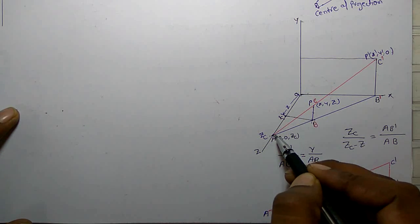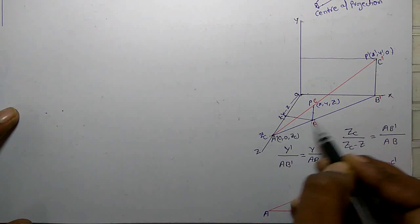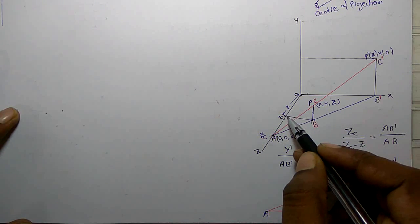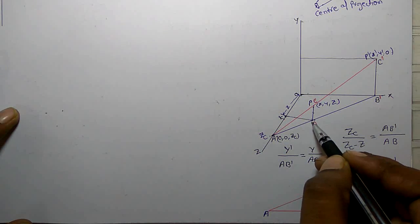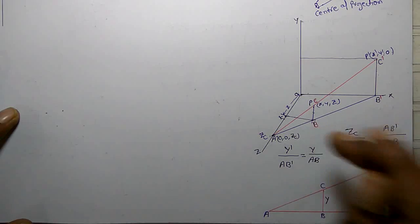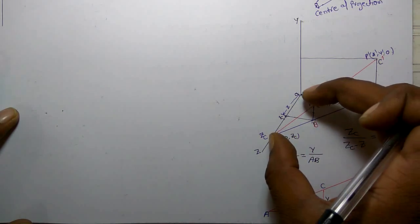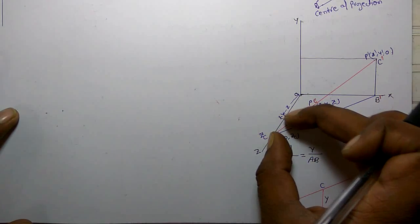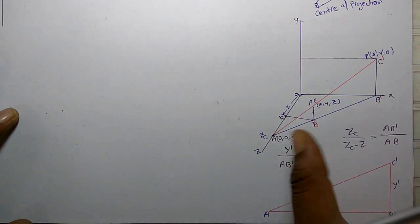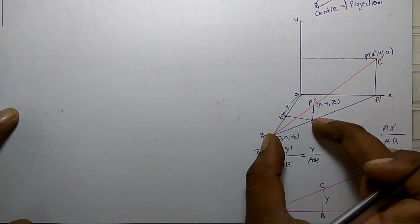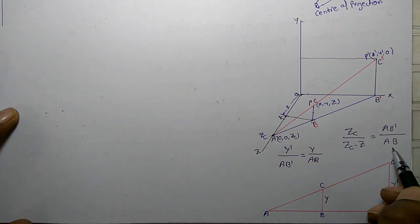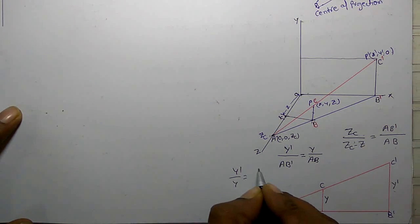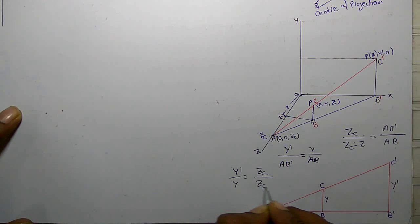Similarly, from triangle A, B-dash, O and triangle A, B, K — where K is a reference point — the ratio gives: Z_C divided by (Z_C minus Z) equals A B-dash divided by A B. Comparing these two equations: Y-dash upon Y equals Z_C upon (Z_C minus Z).